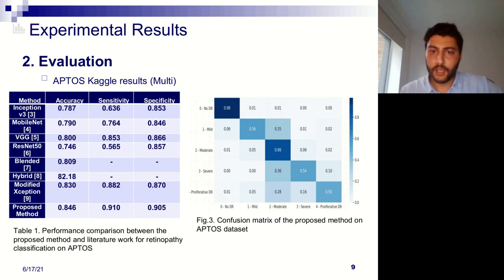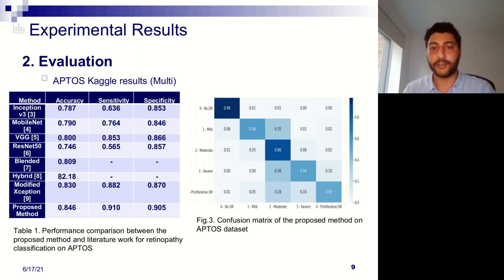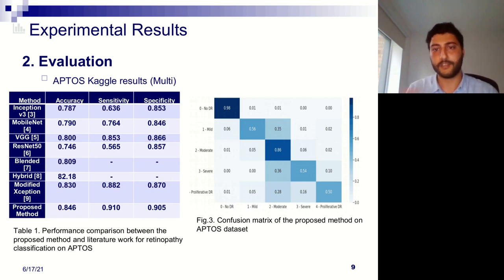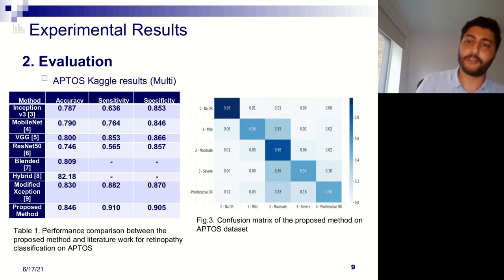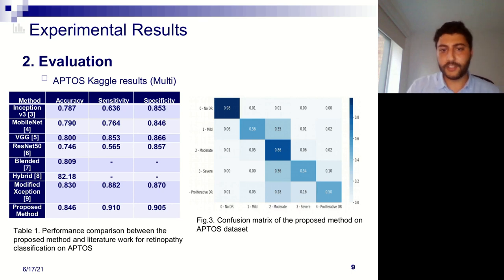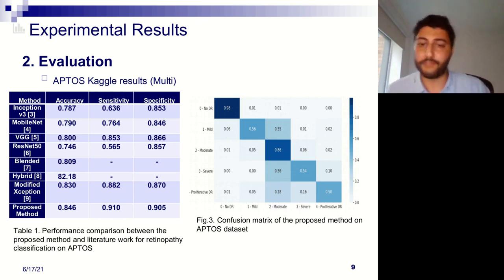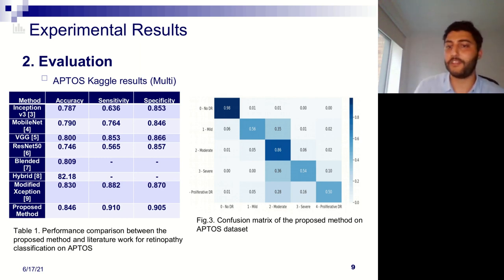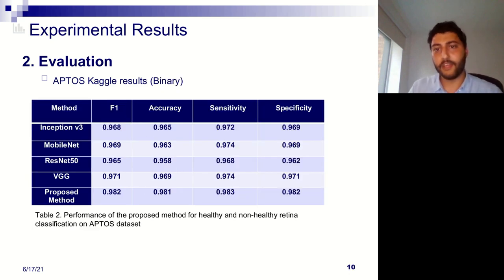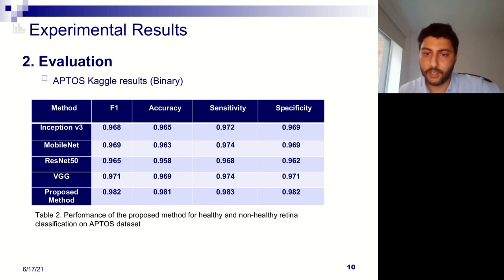For the results, we experimented with both multi-class and binary classification on the same datasets, using the same settings as other published papers — 10% of data for testing and the remainder for training. Our model achieved more than 84% accuracy with 91% sensitivity and specificity, outperforming state-of-the-art recent papers. The confusion matrix shows accuracy for each class. The binary classification — healthy vs. unhealthy — also performed very well compared to baseline models.